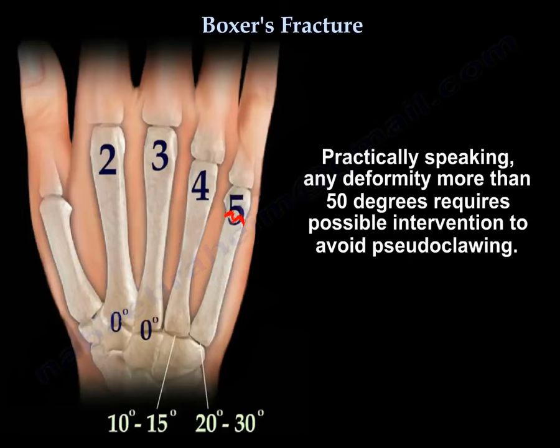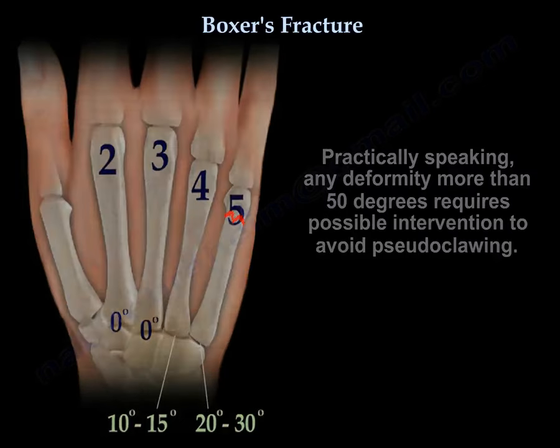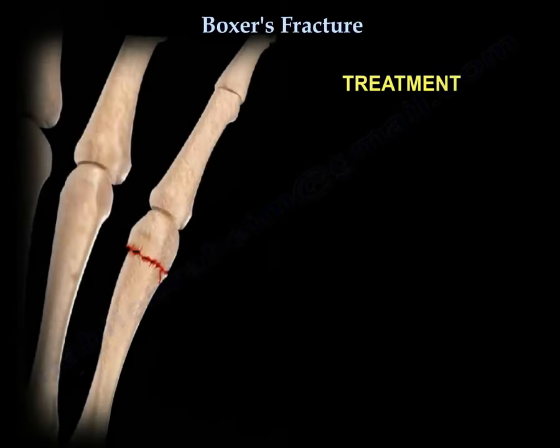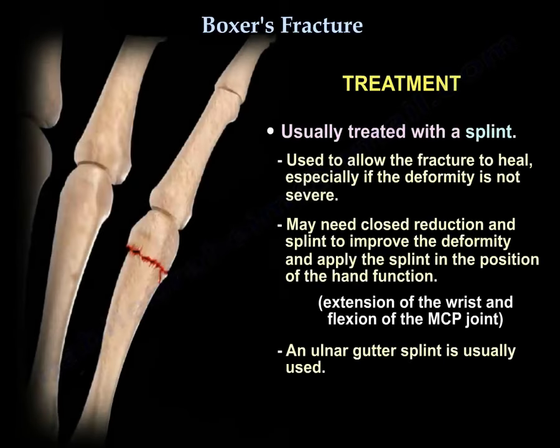Practically speaking, any deformity more than 50 degrees requires possible intervention to avoid pseudo-clawing. Treatment is usually a splint that will allow the fracture to heal, especially if the deformity is not severe.